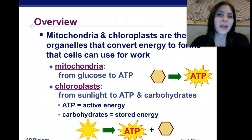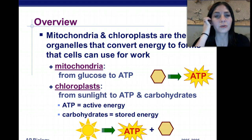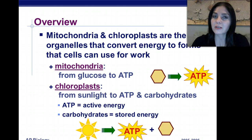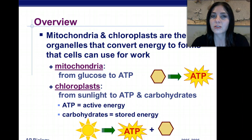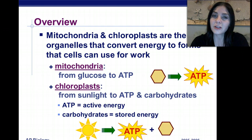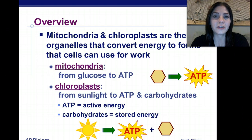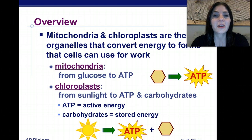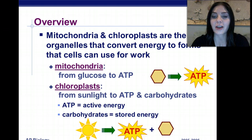Animals and plants both store different types of carbohydrates. Plants store their carbohydrates in the form of a polysaccharide called starch. They also store other carbohydrates in their cell walls called cellulose, which is responsible for composing those cell walls. Animals store their carbohydrates in the form of glycogen, which is also a polysaccharide — poly meaning many, and saccharide meaning sugar.